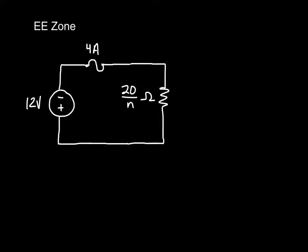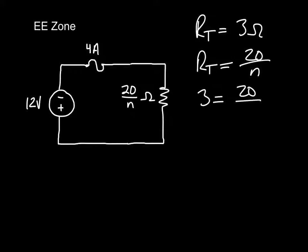From the previous slides, we know that the total resistance is 3 ohms. That's 12 volts divided by 4 amps. We know that this resistance is also 20 over N. So this means that 3 is 20 over N, or that N is equal to 20 over 3, which is equal to 6.66 repeating.